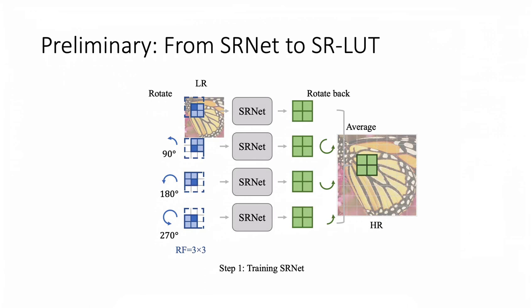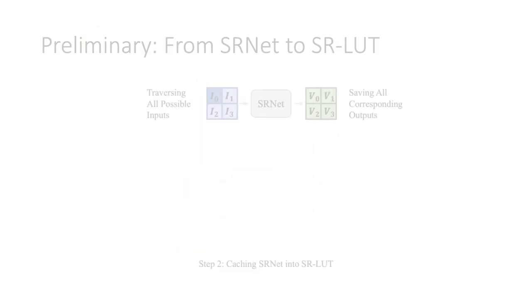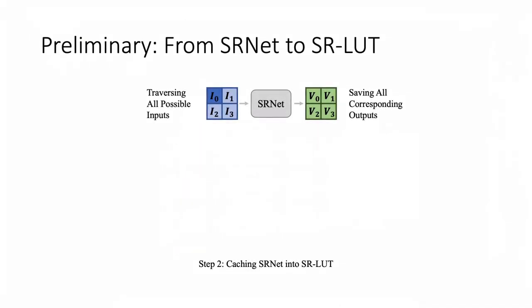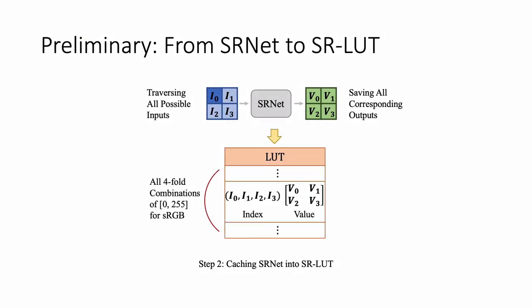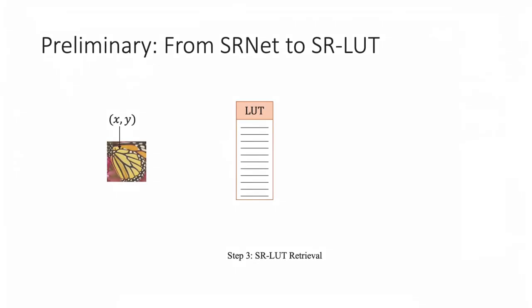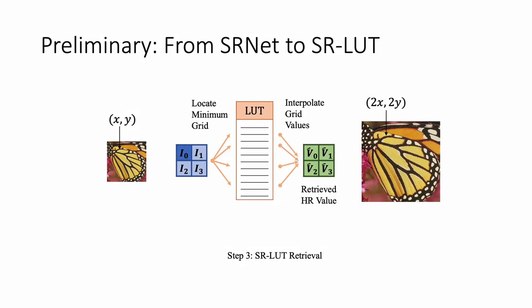Firstly, the authors train a deep SR network. Then, the output values of the trained SR network are cached into a LUT via traversing all possible LR inputs and saving all corresponding HR outputs. Finally, the HR predictions are obtained by locating LR input pixels and interpolating cached HR values.